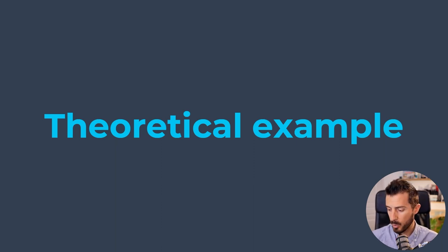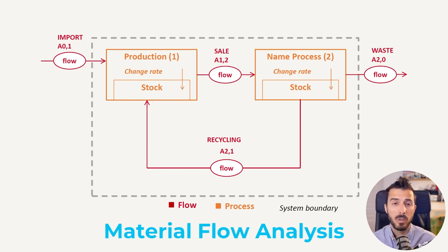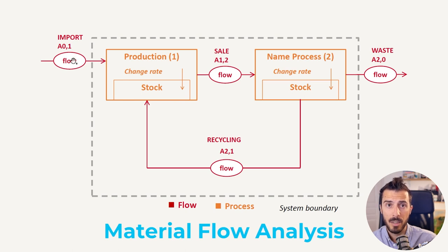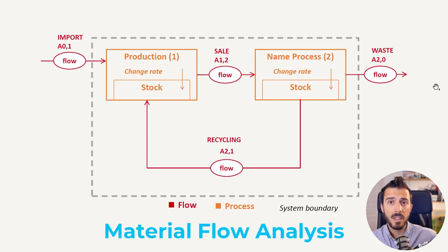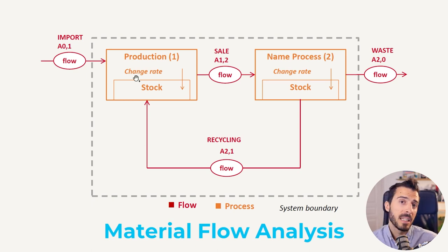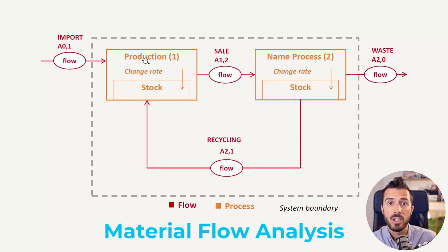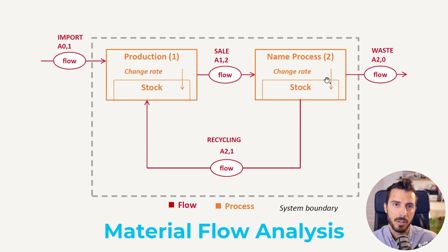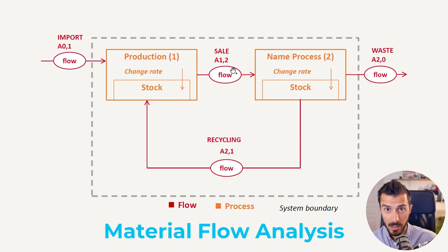Let me give you a theoretical example before a practical one. Here we have the classic glass recycling example with two processes — production and consumption — and four flows: imports going to production, sales going from production to consumption, waste going from consumption out of the city, and recycling going from consumption back to production. Depending on whether you want a static or dynamic system, you also account for the rate of change of your stocks.